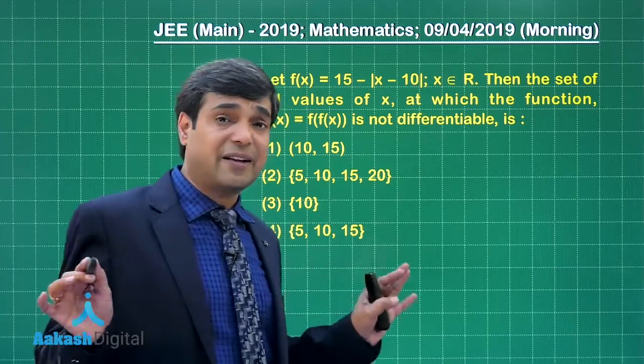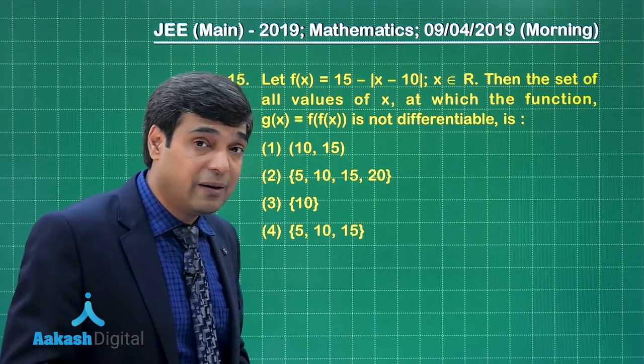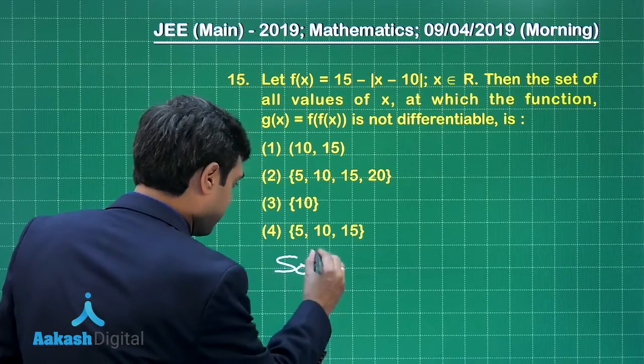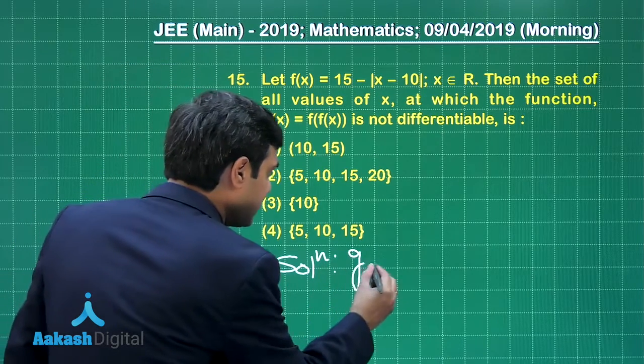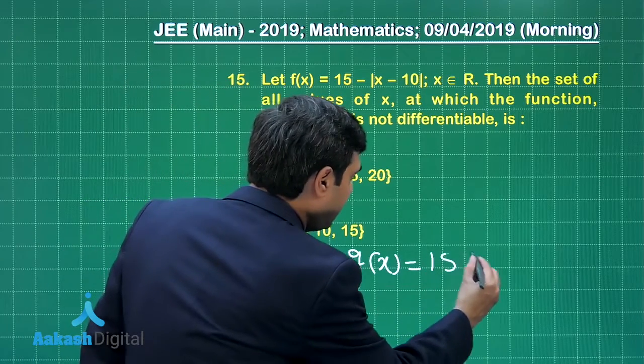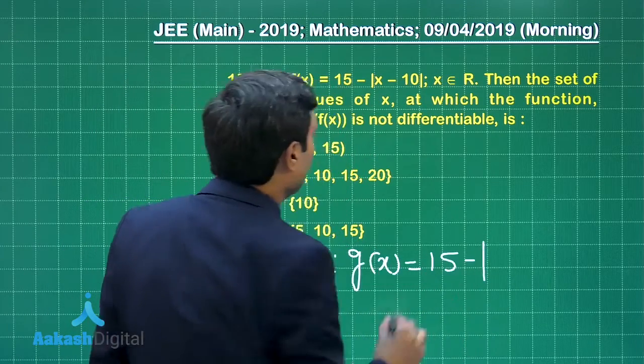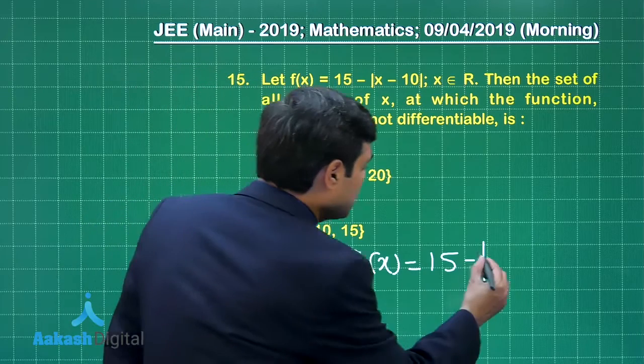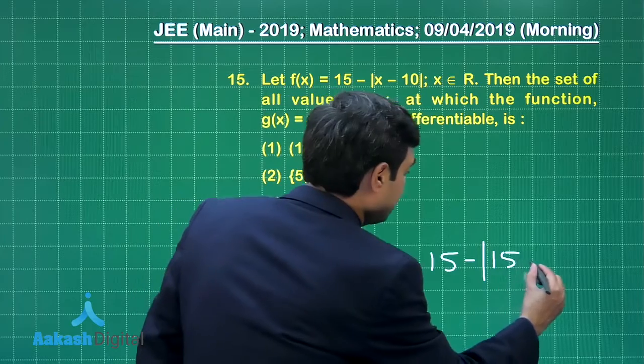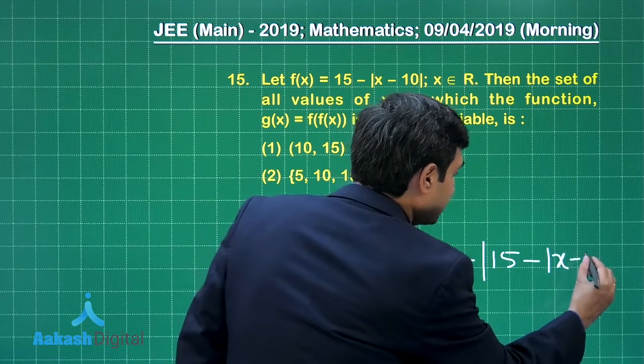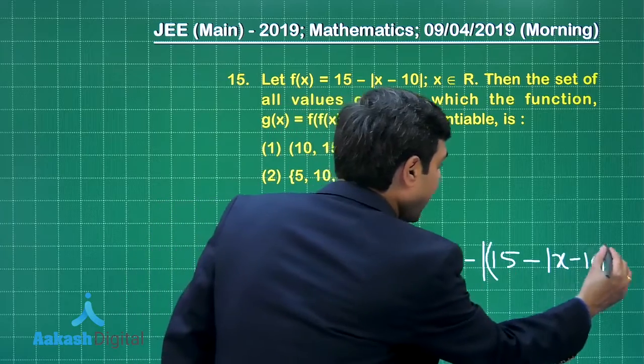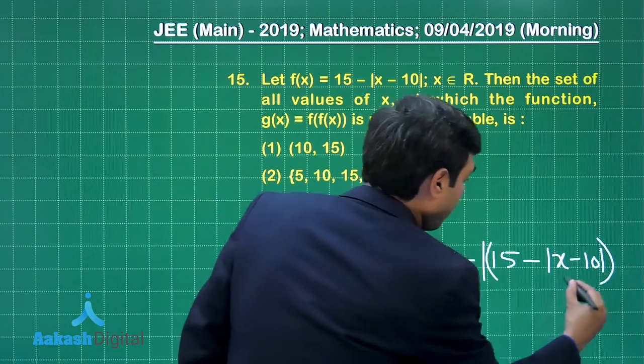The question is about non-differentiability. For f(x) only, it's not differentiable at 10, but the function is g(x) = f(f(x)). So let us write g(x) = 15 - |f(x) - 10|, which equals 15 - |15 - |x - 10| - 10|.